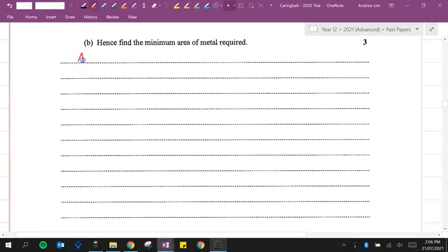So here we've got area equals 4x squared plus 27 on x. Let's rewrite that as 27x to the power of negative 1. If we want to differentiate the area with respect to x, we will get 8x minus 27x to the negative 2. Now we want to make this equal to 0.